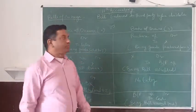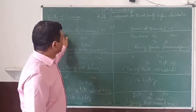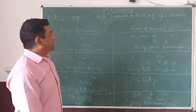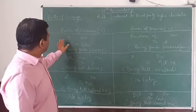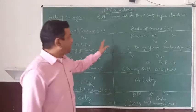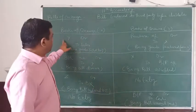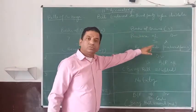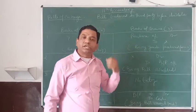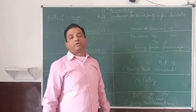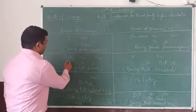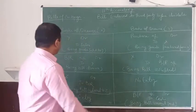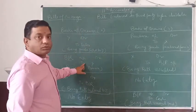Let me explain what entries you have to make in the books of the drawer. The first entry is for the sale — Purchase Account debit to Drawer — and the drawer will record the sale. The second entry, when the bill is drawn by the drawer and accepted by the drawee: Bills Receivable Account debit to Drawee in the drawer's books.